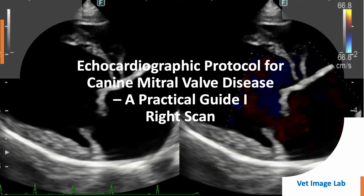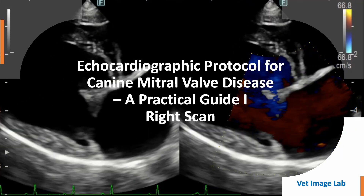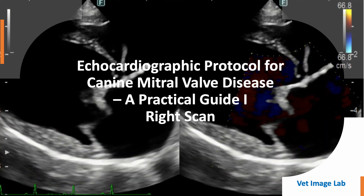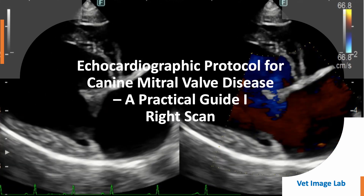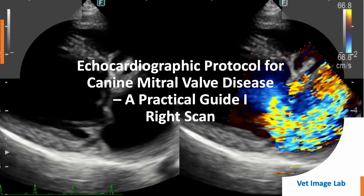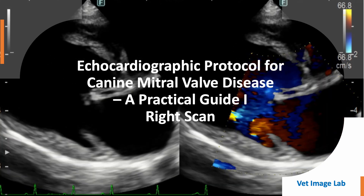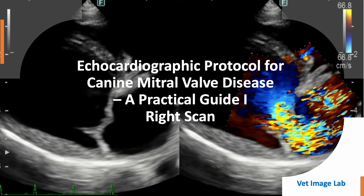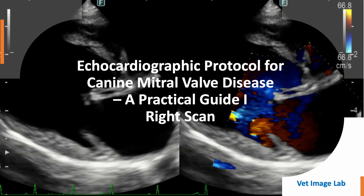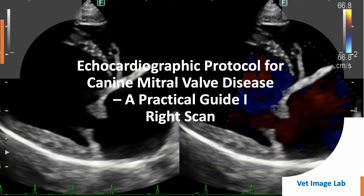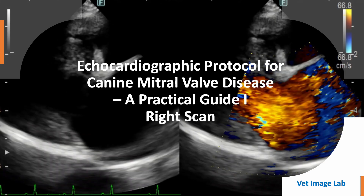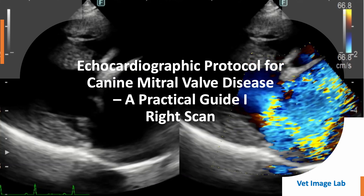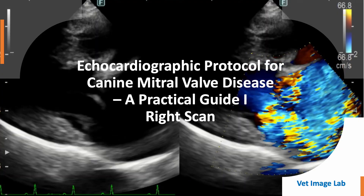Welcome to Vet Image Lab. In this lecture, we'll walk through a practical, step-by-step echocardiographic protocol for evaluating myxomatous mitral valve disease in dogs. This is the first of a two-part series. In this session, we'll focus on what to evaluate from the right-sided scan, and in the next lecture, we'll cover the left-sided scan. At the end of the series, we'll put it all together to build a complete echocardiographic checklist for MMVD. Let's get started.